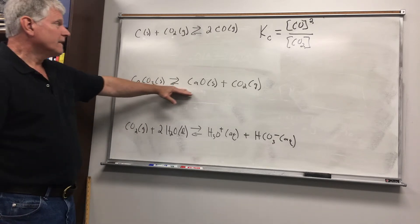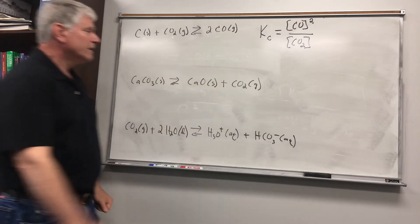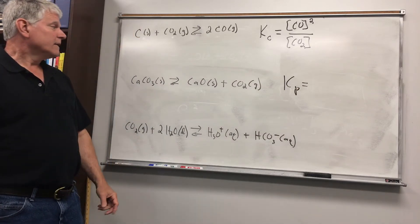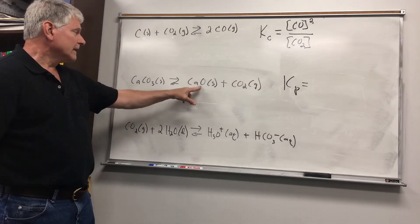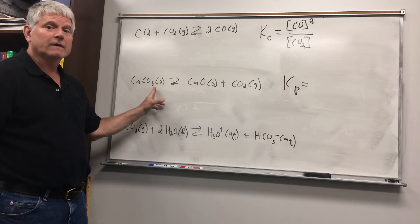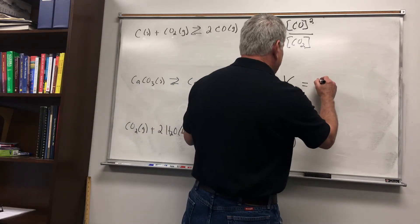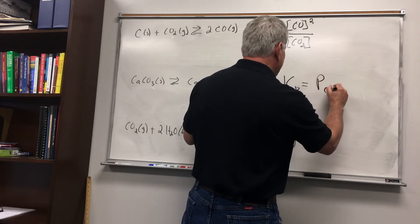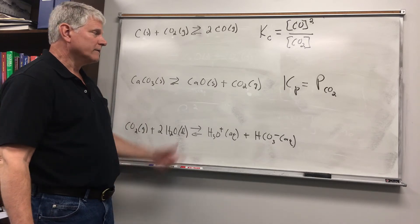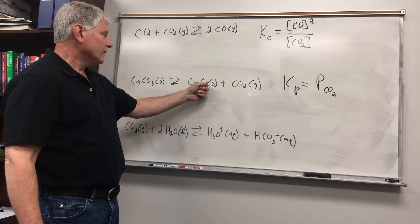Let's consider this second reaction. I have two solids and one gas, so I'll write the equilibrium constant in terms of pressure. We would neglect or leave out the solids and not include those in the equilibrium constant. We only have one gas species, so the equilibrium constant would be the pressure of CO₂ raised to the first power. That's all there is — we only include that one product because we're not going to include the solids.